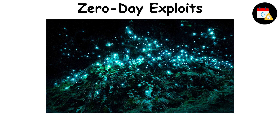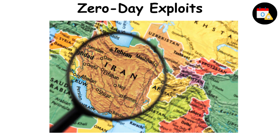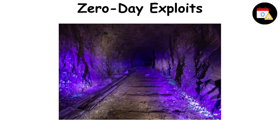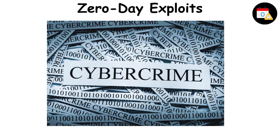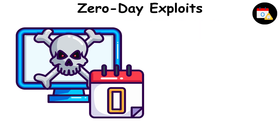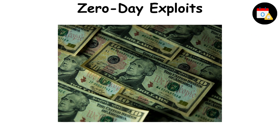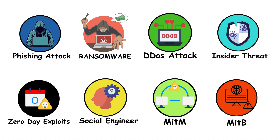One well-known instance is the Stuxnet worm, which was identified in 2010 and used to compromise Iran's nuclear program by attacking centrifuges used for uranium enrichment. It did this by taking advantage of Zero-Day vulnerabilities in Windows. In the cybercrime underground, Zero-Day exploits are highly prized and can bring substantial amounts of money when sold on the illicit market.